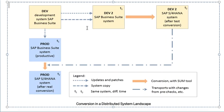Whatever updates and patches are made, those are moved to the transport request. Those transport requests are used while converting the production ERP system to the production S4HANA system. This is the procedure of S4HANA conversion.